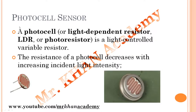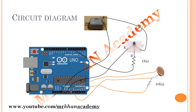The last component is the photocell. A photocell, also called an LDR (light dependent resistor) or photoresistor, is a light-controlled variable resistance. According to light density, the resistance varies. The resistance of a photocell decreases with increasing incident light intensity and vice versa.